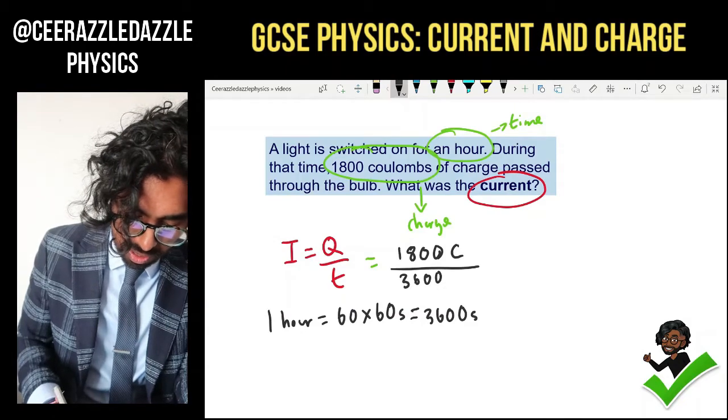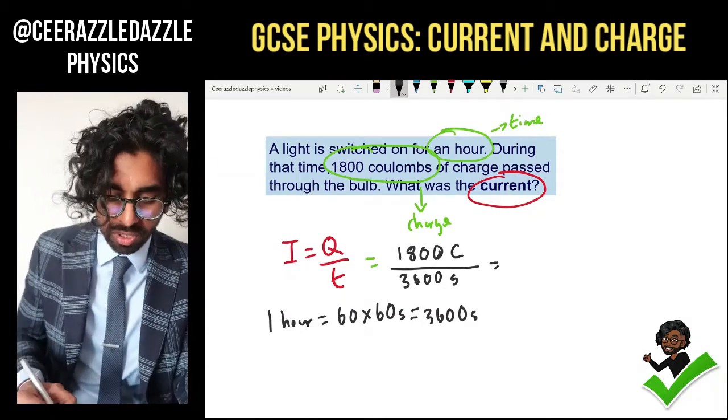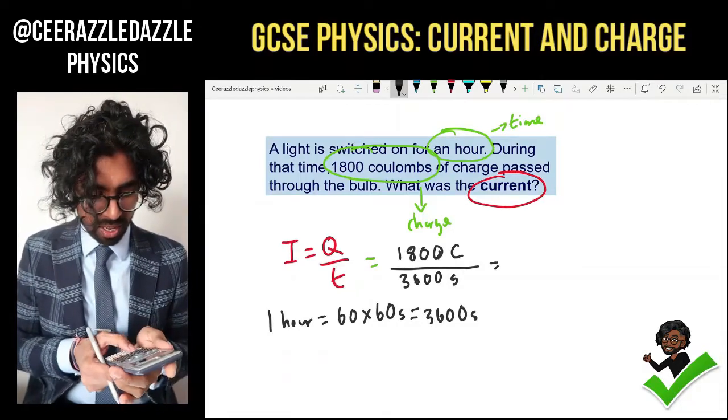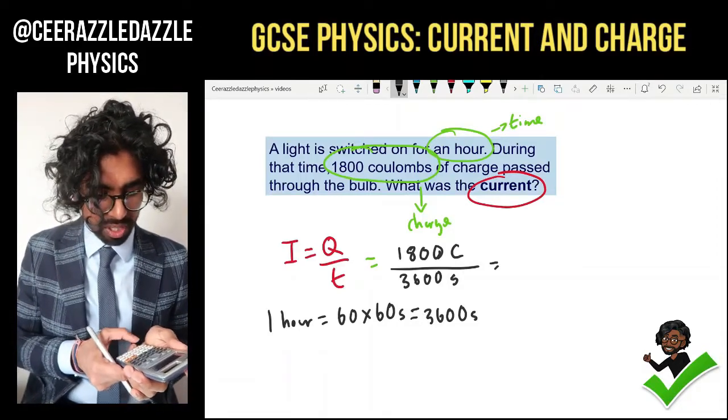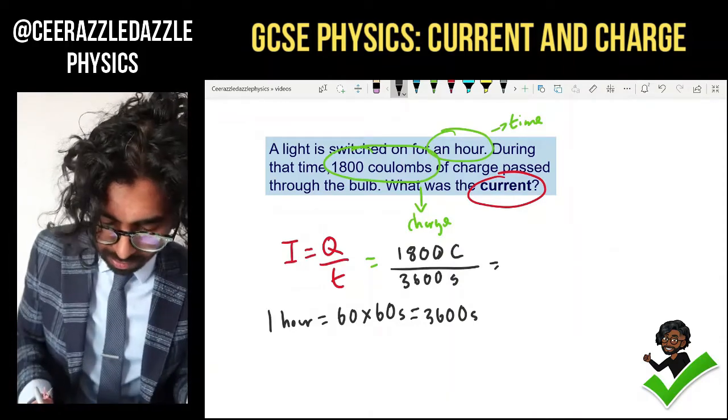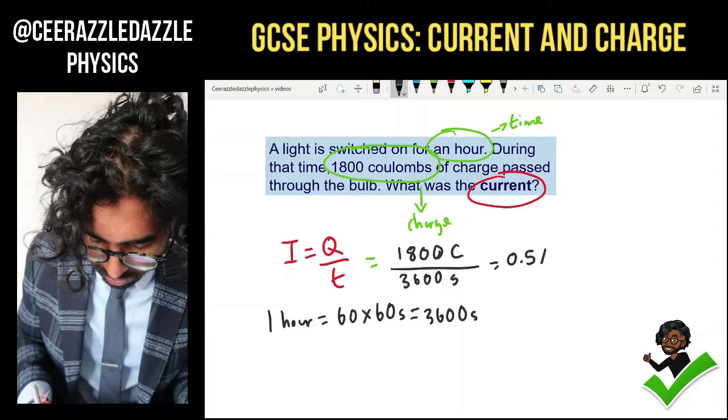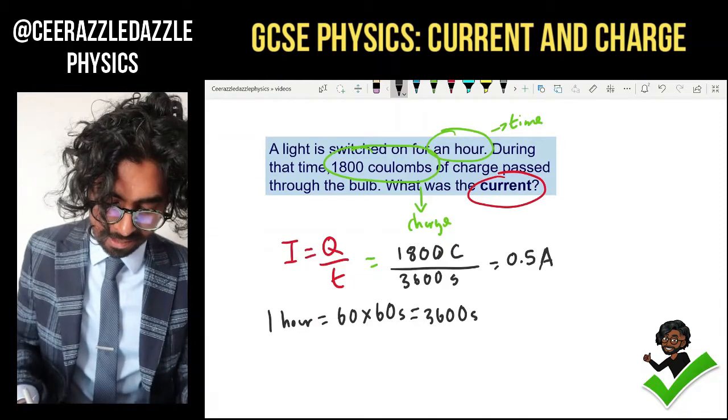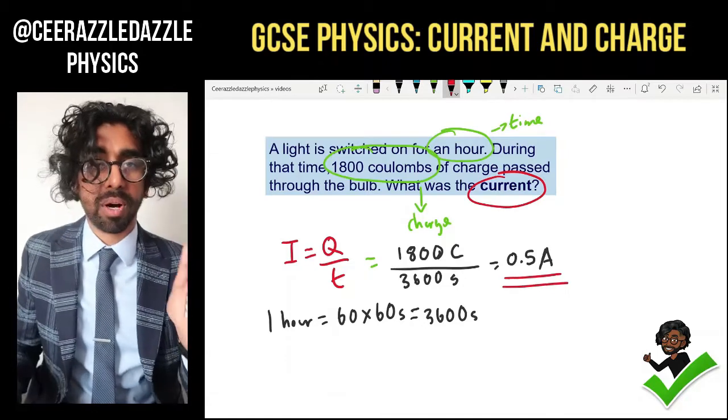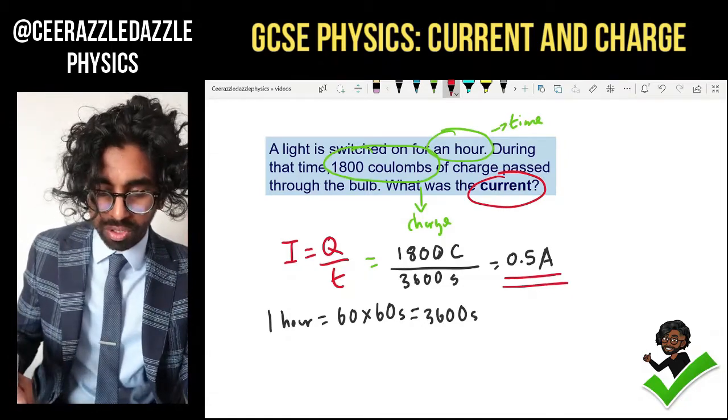3,600 seconds. You always have to show your working out in physics. So take your calculator out. It's going to be 1,800 divided by 3,600. The answer is 0.5, 0.5 amps. You need to put the unit down for the mark. Excellent. So we've done one question, let's try another one.